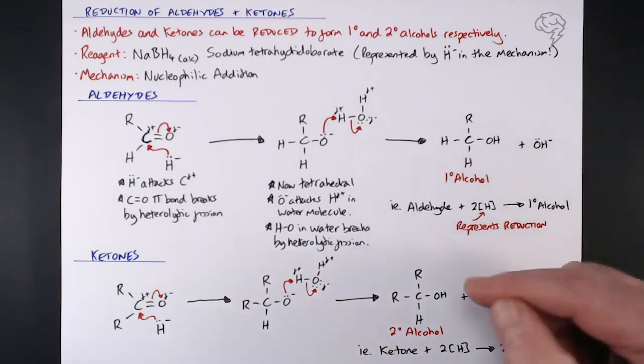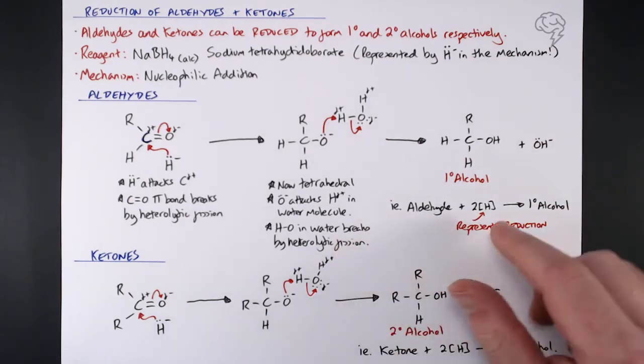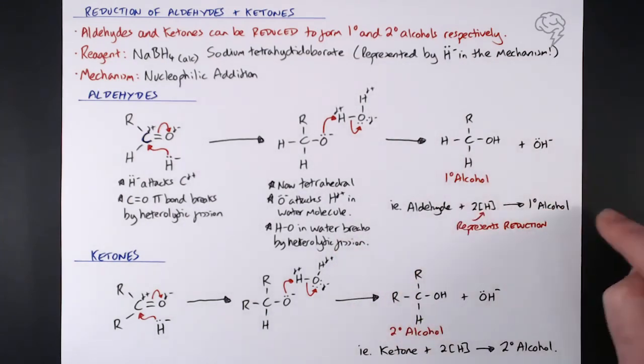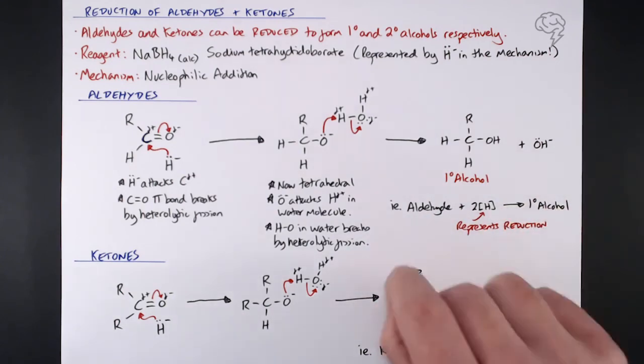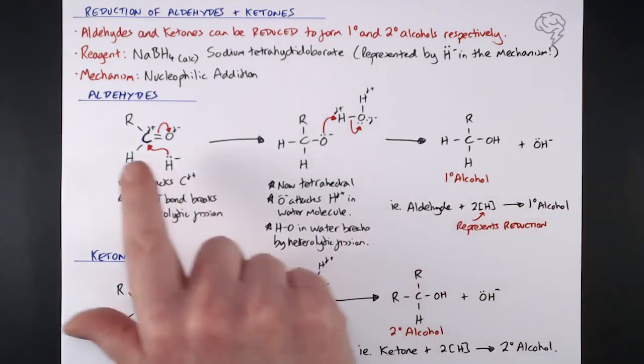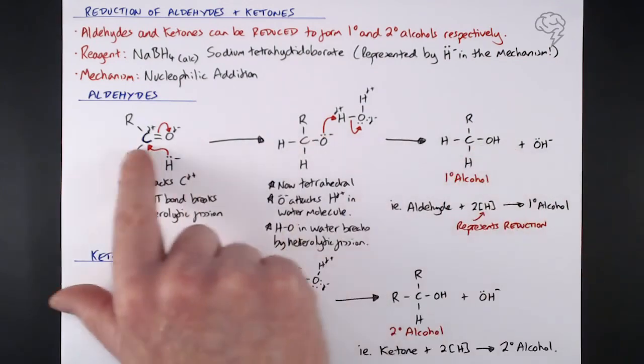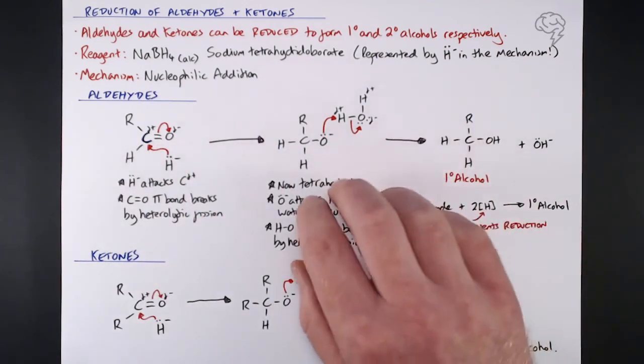Be wary in an exam - for one mark, if they want you to write an equation for the reduction of propanal to propan-1-ol, this is what you give them. If they want the mechanism for propanal to propan-1-ol, this is what you give them. This is going to be worth like three marks.